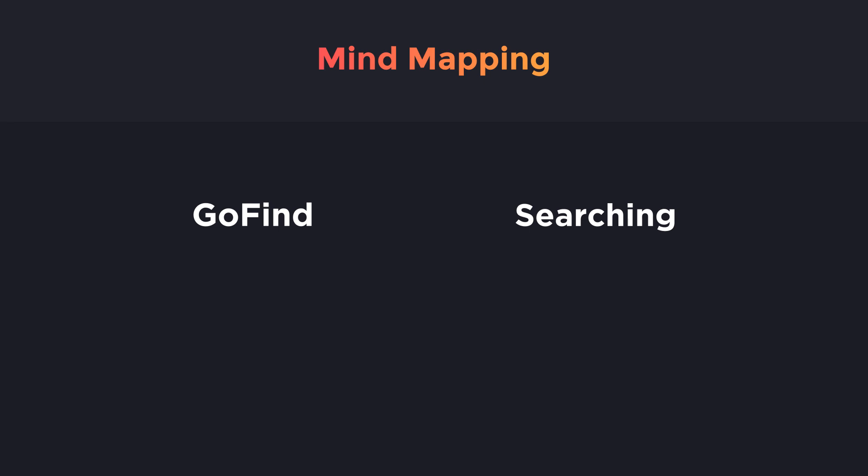Let's continue with the mind mapping process. For the name Go Find, we can either use the initial letter G or the combination of letters G and F. If you want to emphasize on 'Go,' we can use elements like arrow marks.